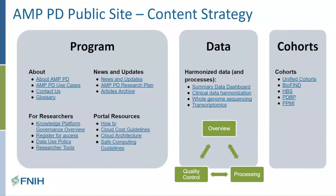At the program level, this includes all information related to AMP PD, including relevant updates, data releases, governance and policy information, and general how-to resources related to the platform and cloud architecture. At the data level, we provide specific information about the types of data available for analysis, including clinical data, whole genome sequencing data, and transcriptomics data, with a consistent template providing a snapshot of key metrics, curation and processing details, tools and methods, infographics, and quality control measures. At the cohort level, we provide an overview of each cohort that contributed data to AMP PD, including key details, how they were selected, study-level inclusion-exclusion criteria, and other protocol information.